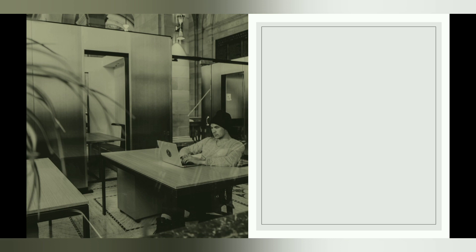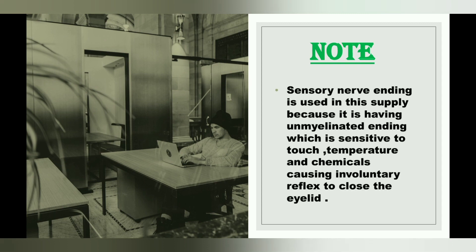Now for the special note: why do we consider sensory nerve endings specifically? Because the sensory nerve endings used in this supply are unmyelinated — unmyelinated means they are sensitive to touch, temperature, and chemicals. When the eye comes in contact with touch, temperature, or chemicals, these unmyelinated endings cause an involuntary reflex to close the eyelid, which protects our eye. This is why sensory nerve endings are essential for corneal nerve supply.